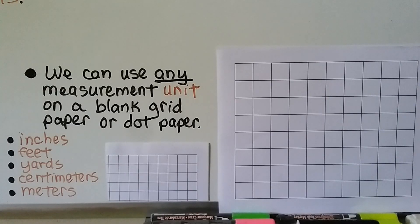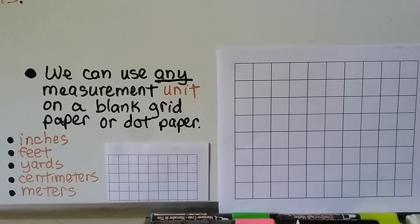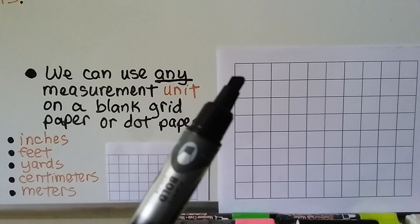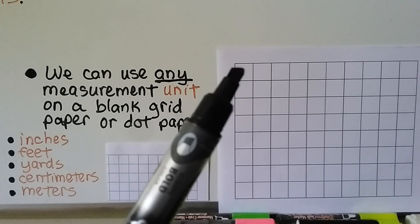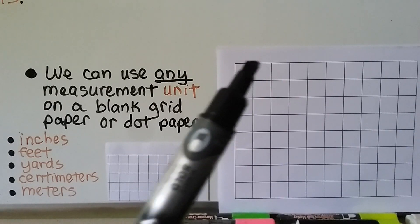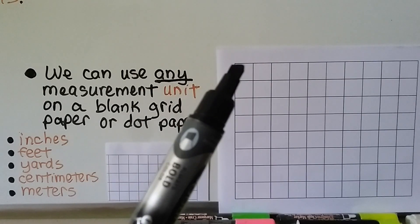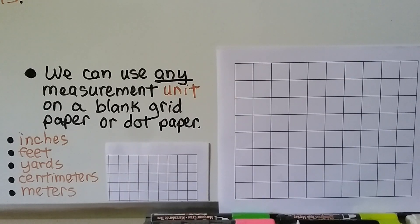We can use any measurement unit on blank grid paper or dot paper — inches, feet, yards, centimeters, meters, even miles and kilometers. We just say that one space equals one inch in this problem, or one centimeter in the next problem. We can use any measurement unit on blank grid paper; we just assign that measurement to it.